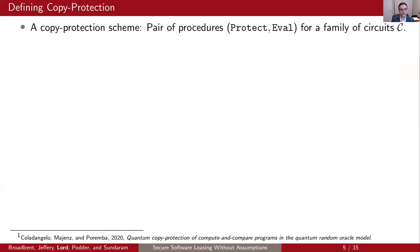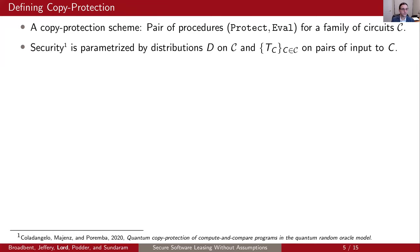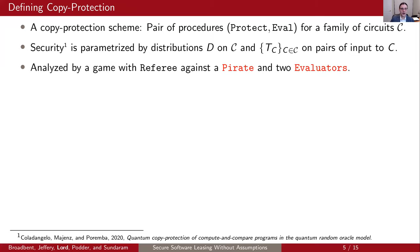Let's formally define copy protection. We start off with a pair of procedures, protect and eval — a copy protection scheme for a certain family of circuits. The security of our scheme is parameterized by a distribution D on the family of circuits we are copy-protecting, as well as distributions on pairs of inputs to the circuit, where every circuit C has its particular distribution on pairs of inputs T_C. We analyze security via a game played by a referee against a collaborating pirate and two evaluators. The pirate and two evaluators get to set a strategy ahead of time, but communication during the run of the game is quite limited. I want to highlight that the two evaluators are distinct and can behave in completely different ways.